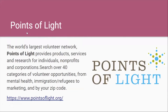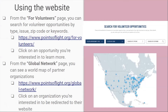The next volunteer opportunity we're going to talk about is called Points of Light, the world's largest volunteering network. Points of Light provides products, services, and research for individuals, nonprofits, and corporations. You can search over 40 categories of volunteer opportunities, from mental health, immigration, and refugees, to marketing, and search by your zip code. From the For Volunteers page, you can search for volunteer opportunities by type, issue, zip code, or keywords using dropdown menus. Click on an opportunity you're interested in to learn more.